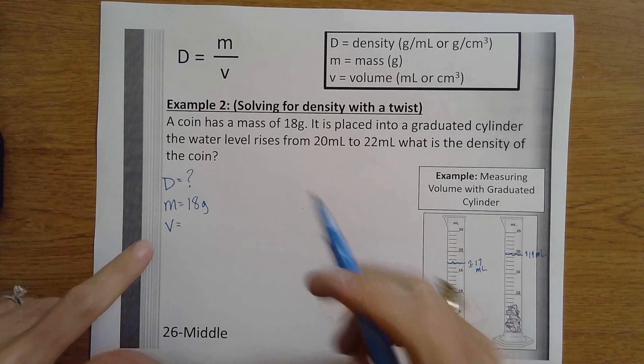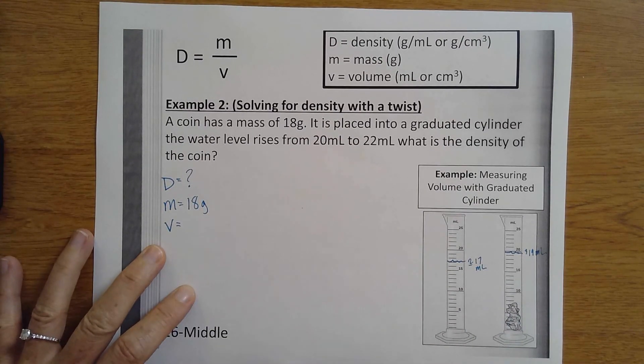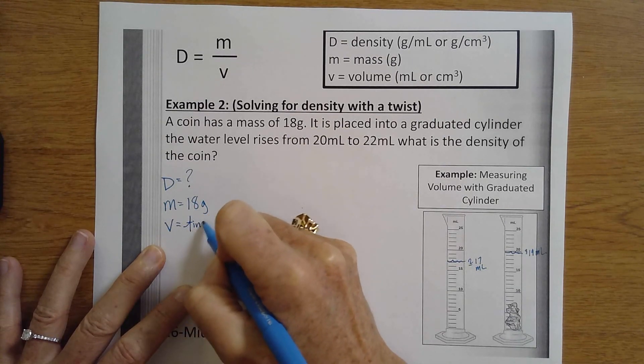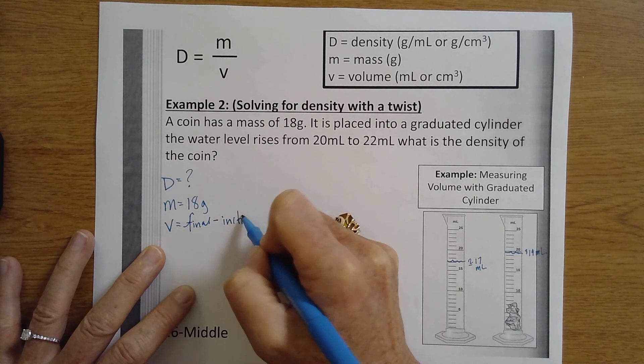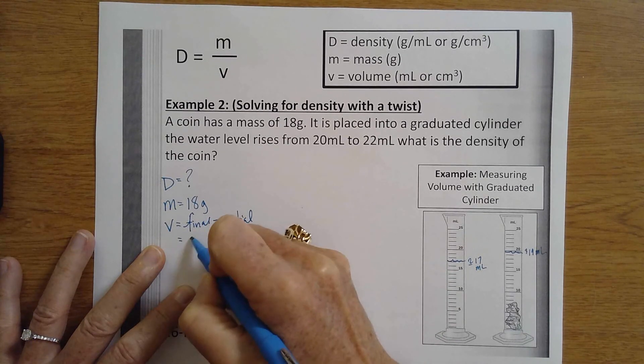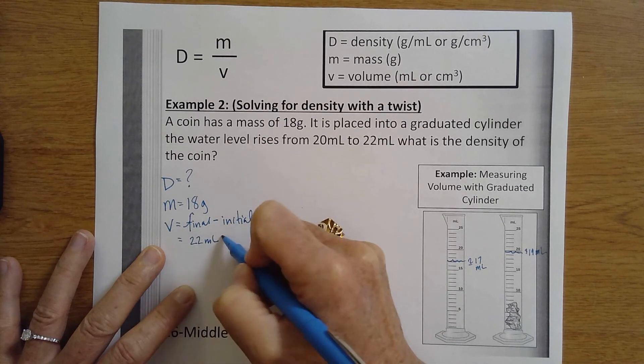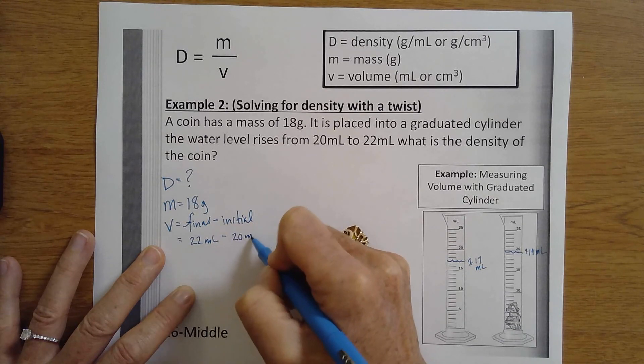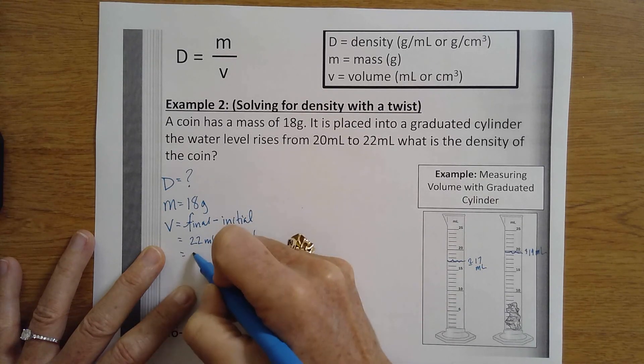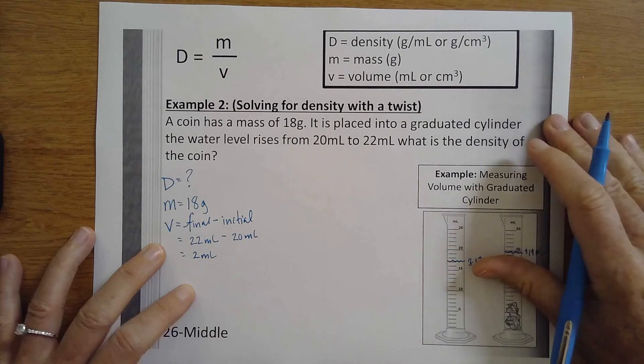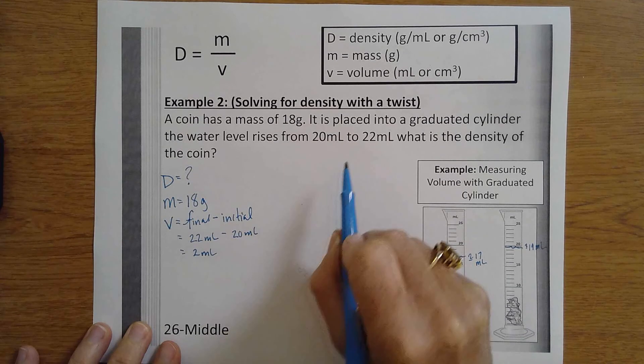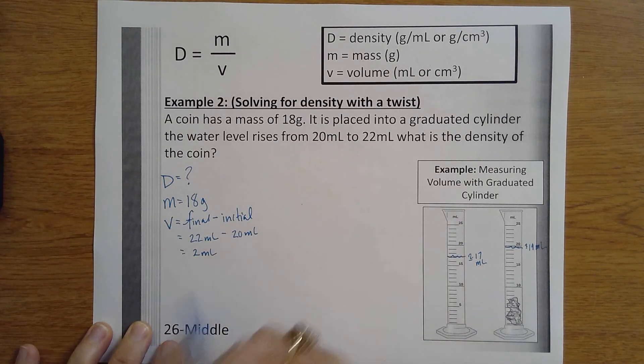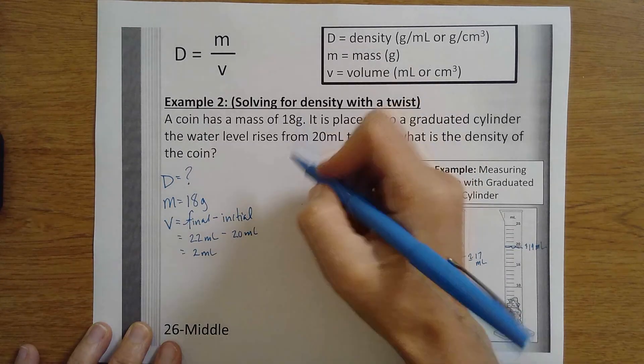So we're going to take our final volume and subtract our initial, so that's going to be 22 mils minus 20 mils, which is equal to 2 mils. Right, so this is the twist, because they're not coming right out and telling me what the volume is. I had to do a little bit of math to get there.